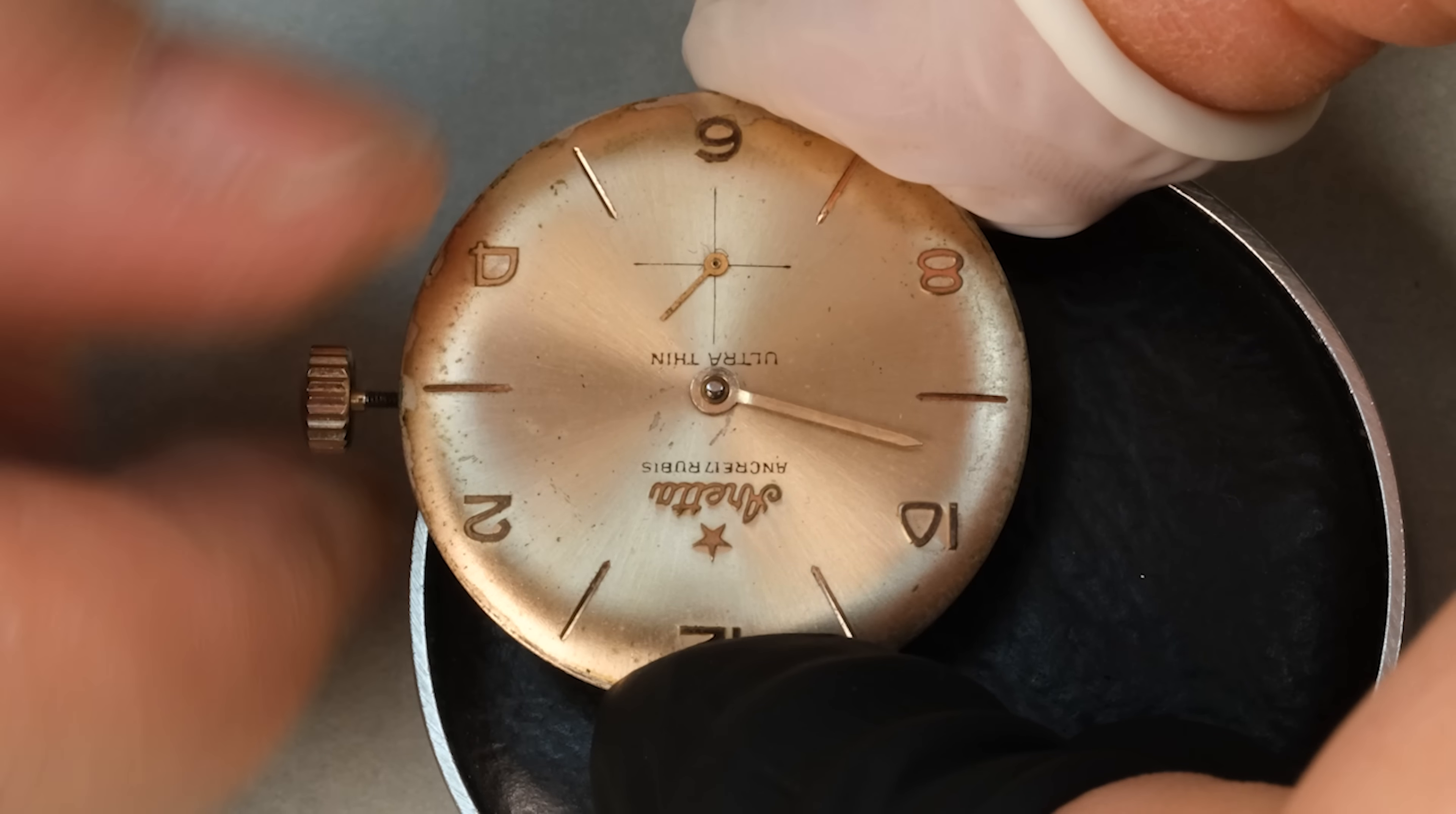All right, with the crown in place we just need to put the case back on. There we go, a little bit shinier than the last time we saw it. Still a fingerprint magnet. And with a new strap on the watch, let's see if we made a difference.